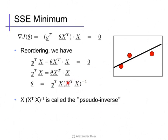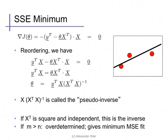This quantity, x times x transpose x inverse, is called the Moore-Penrose pseudo-inverse of x transpose. If x transpose is square and full rank, it's exactly equal to x transpose inverse. But in most practical situations we have more data than features — meaning m greater than n — in which case the pseudo-inverse gives the minimum mean squared error of fit.